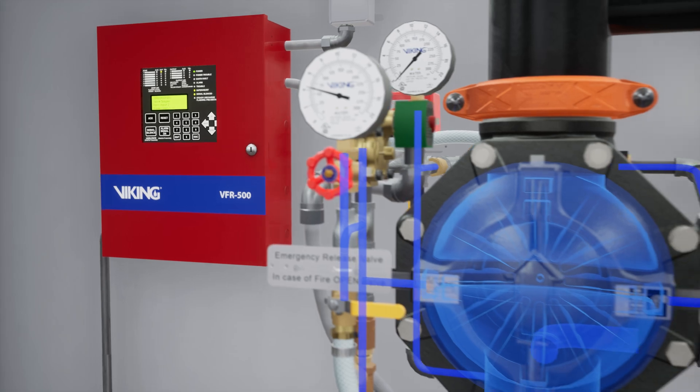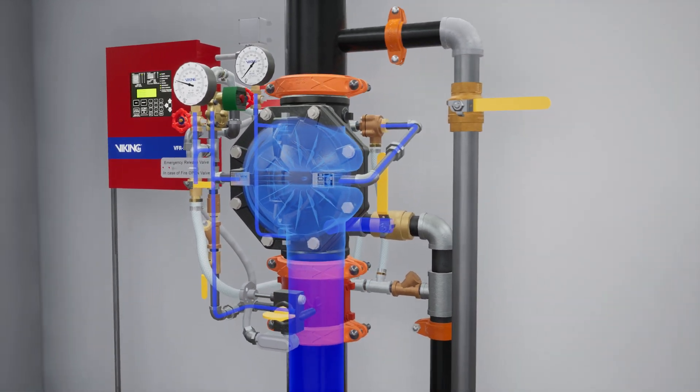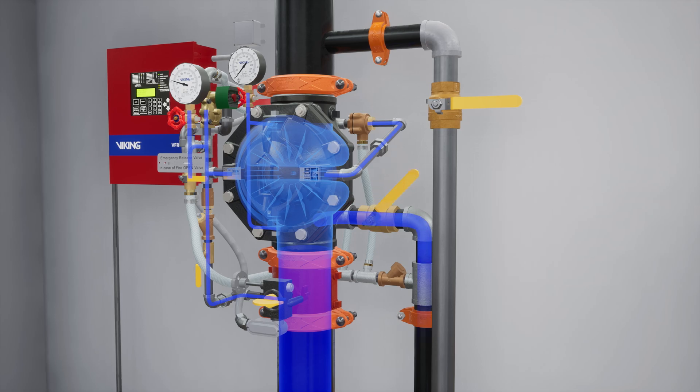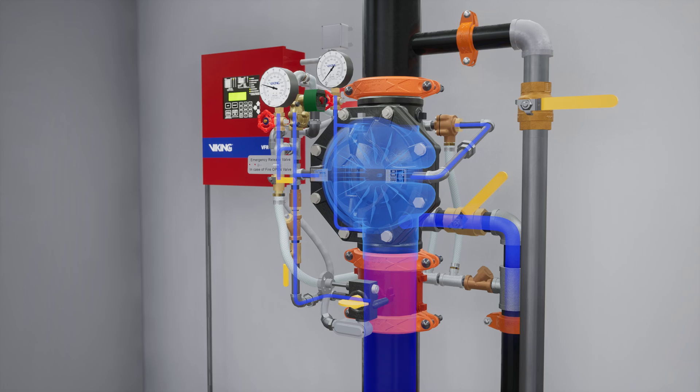Once priming pressure is re-established in the priming chamber, slightly open the flow test valve. Then slightly open the water supply control valve.